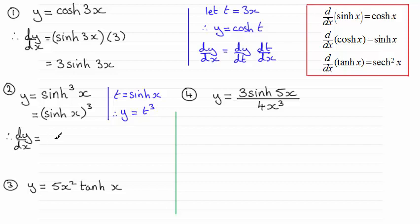So therefore dy/dx is going to equal dy/dt, which is going to be 3t². So we've got 3 times t², but t is sinh(x), so we've got (sinh(x))². And then multiply it by dt/dx. So the differential of sinh(x) is going to be cosh(x). So we've got that multiplied with cosh(x). Cleaning this up, we end up with 3sinh²(x)cosh(x).